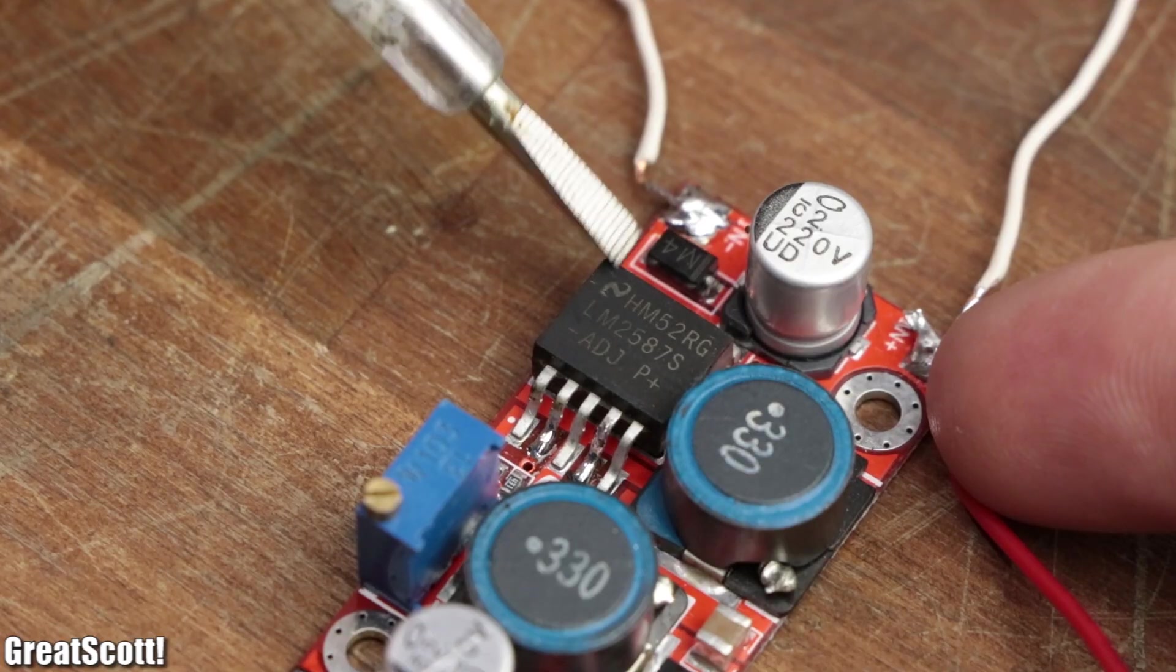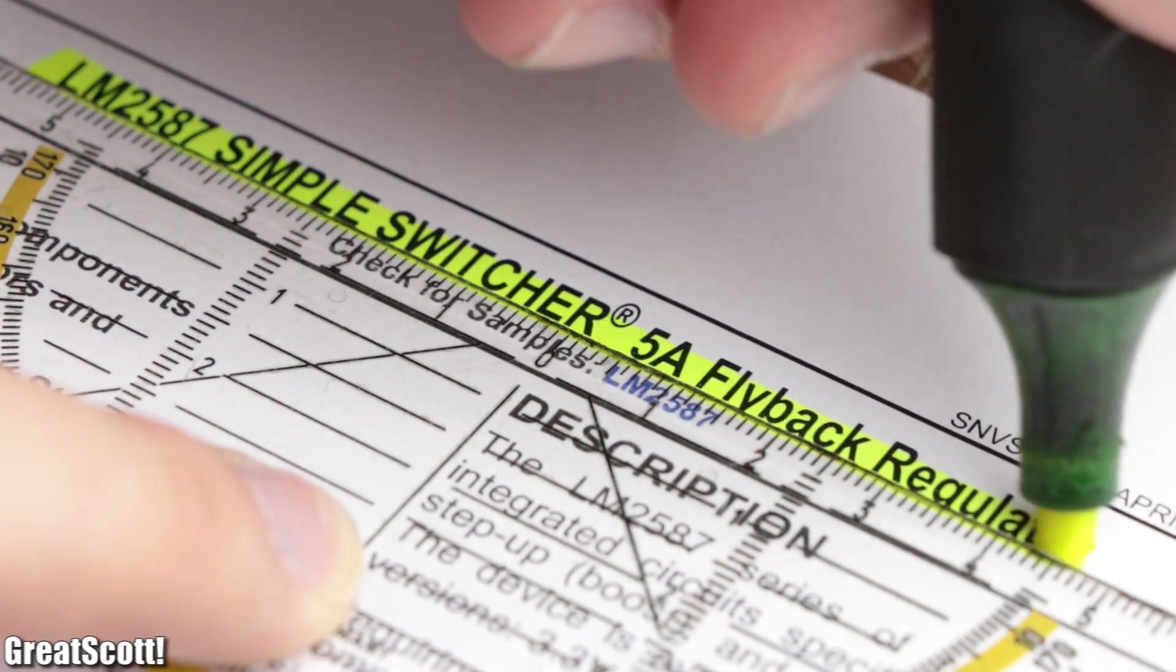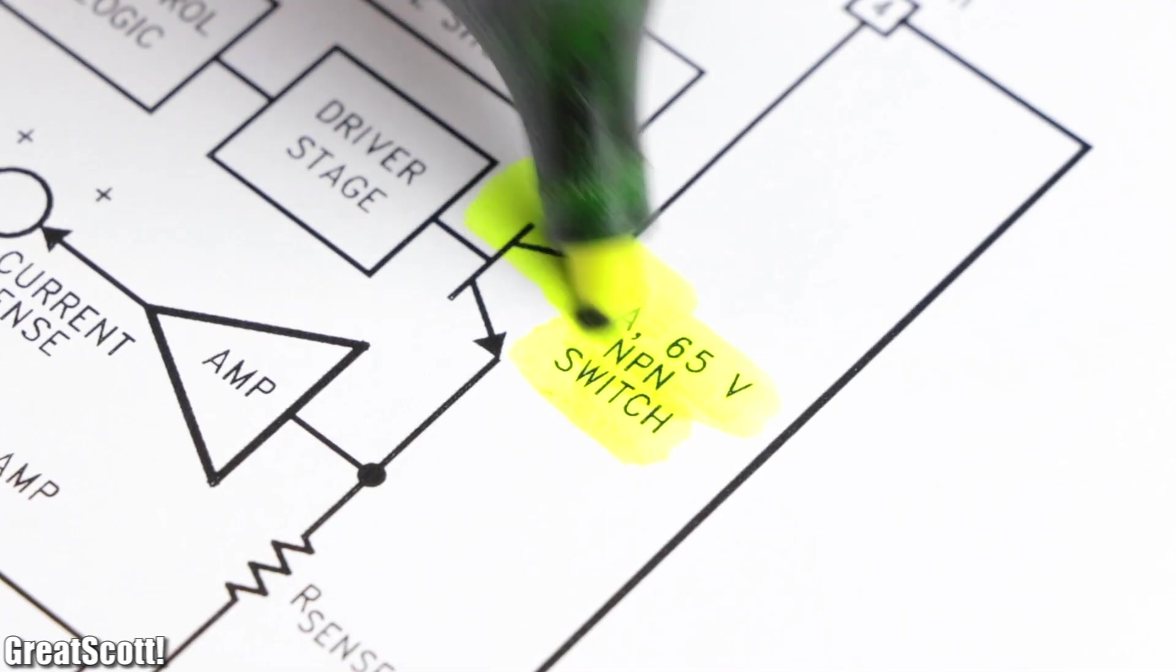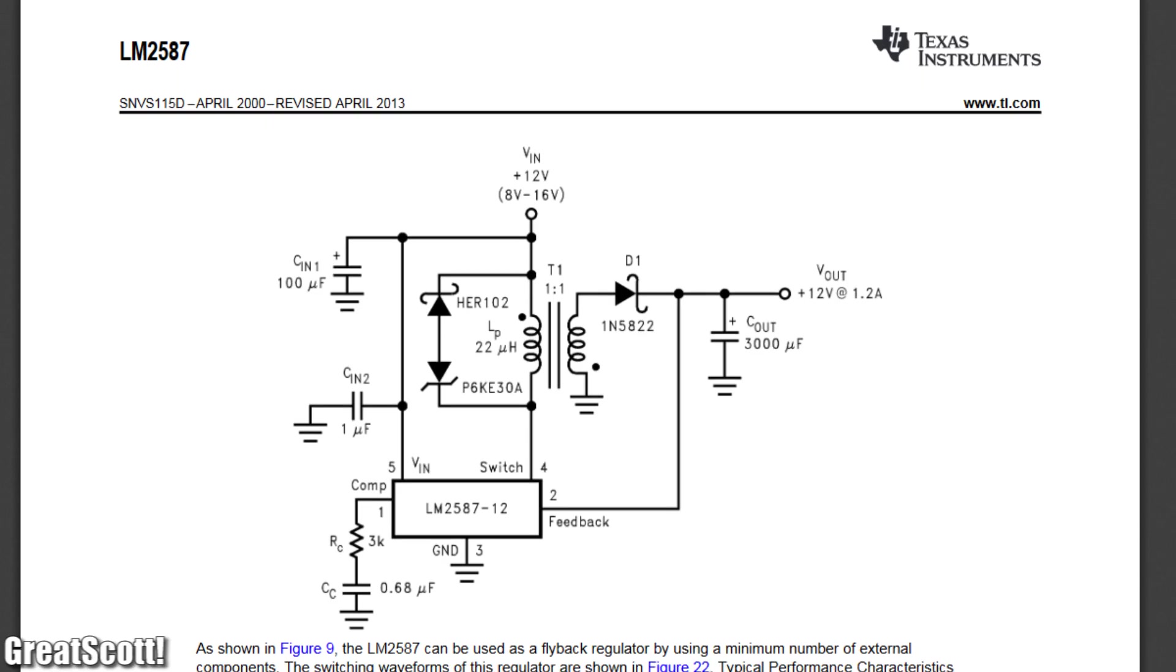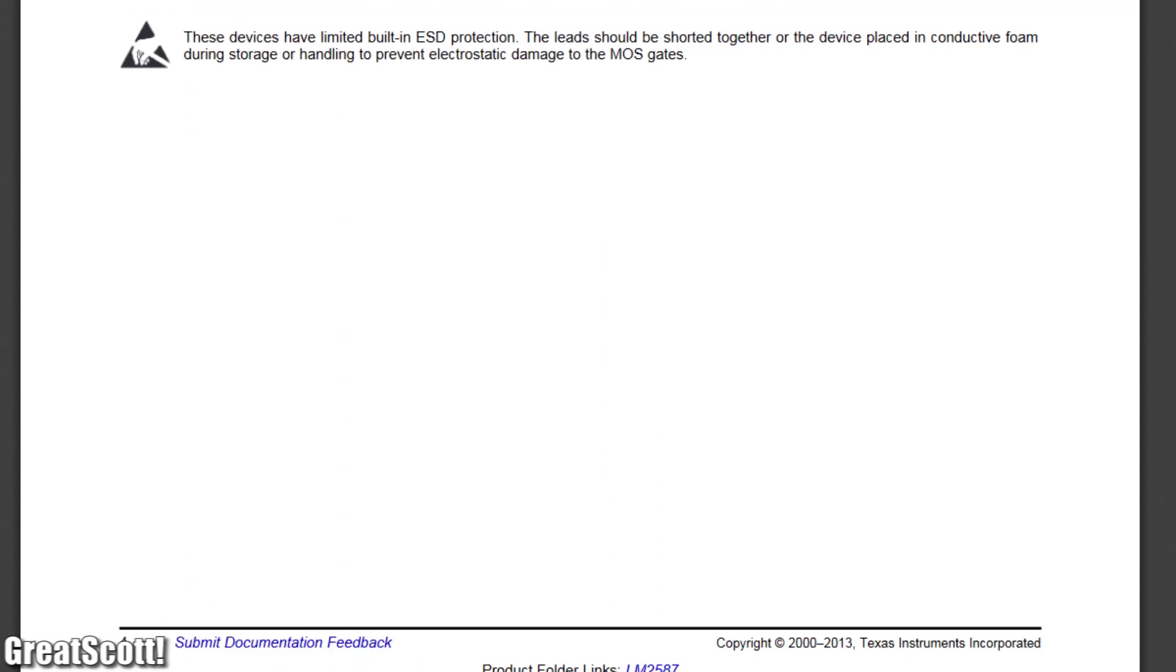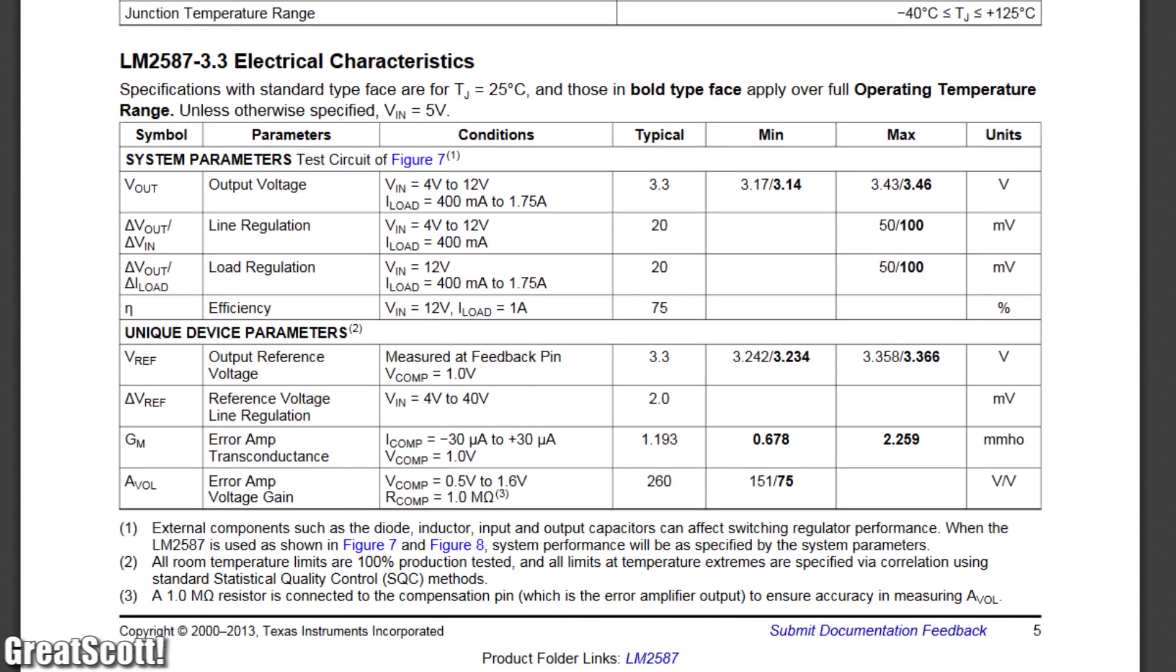The reason is that the main IC, the LM2587 5A flyback regulator, integrates the switch, aka the NPN BJT. And while we're at the subject of the datasheet, it is always the first reference point when it comes to modifying a circuit.